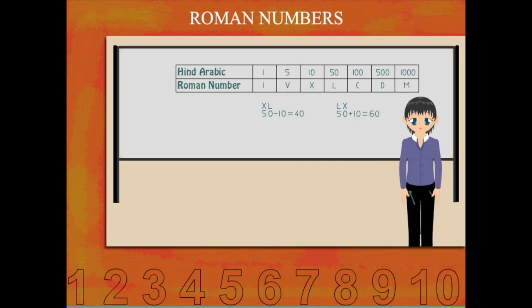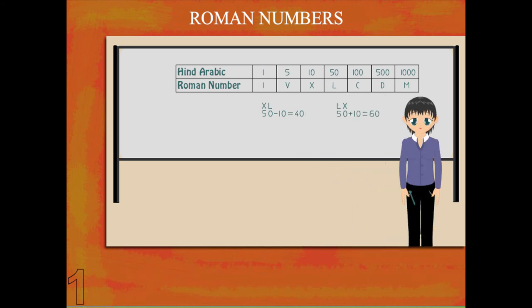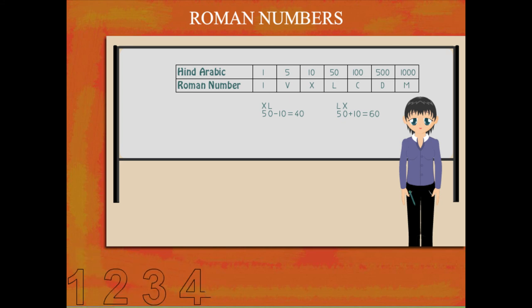The left side number has to be subtracted from the larger number, and the right side number has to be added. The students respond: "We've got your point, Nancy ma'am."